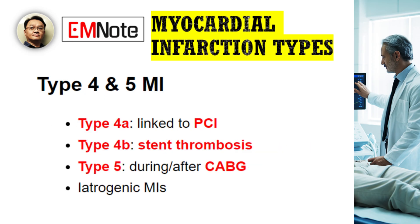We also classify MIs related to specific medical procedures. Type 4 MI is directly linked to percutaneous coronary intervention, or PCI, and is further subdivided. Type 4A is associated with the PCI procedure itself, while type 4B is due to stent thrombosis. Similarly, type 5 MI occurs during or immediately after coronary artery bypass grafting, or CABG. These are iatrogenic MIs — a consequence of the very interventions we use to treat coronary disease.